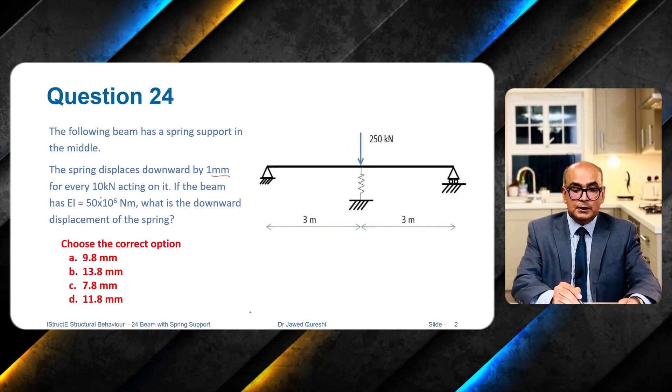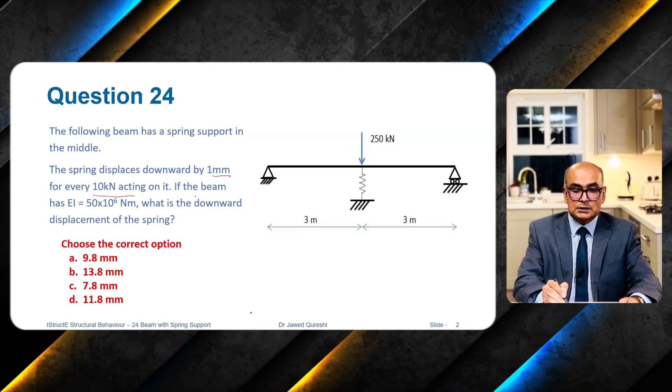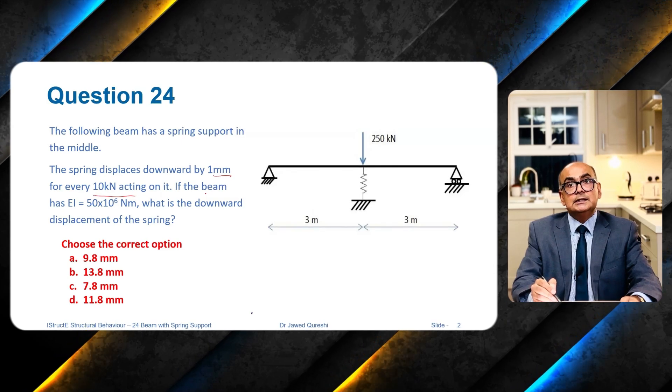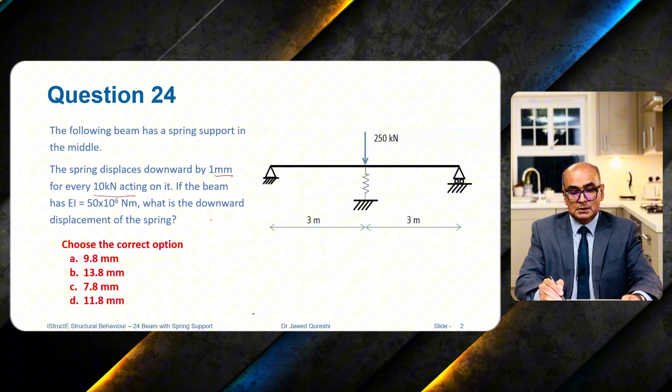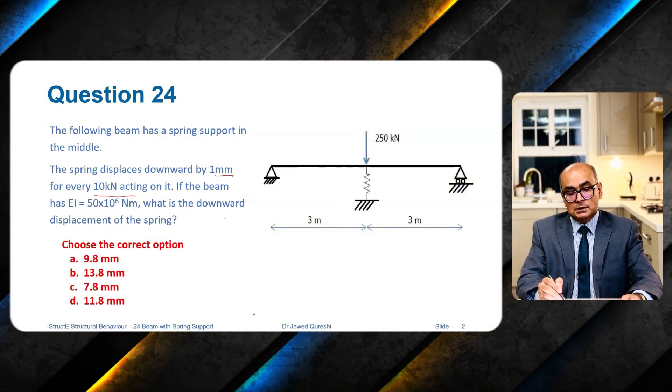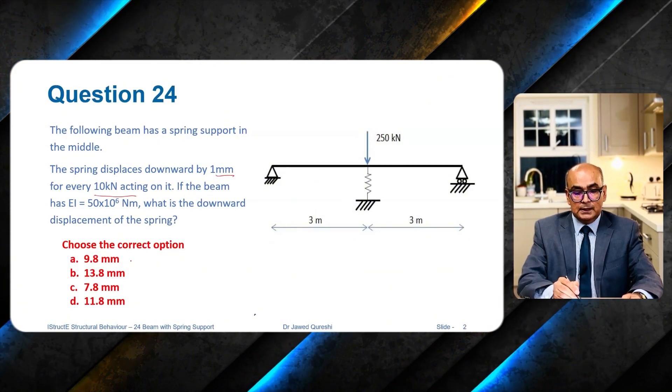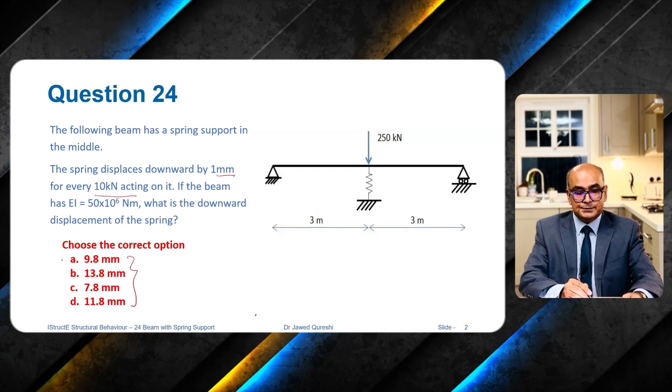The spring displaces downwards by one millimeter for every 10 kilonewton acting on it, and the beam has EI = 50 × 10^6 newton millimeter.